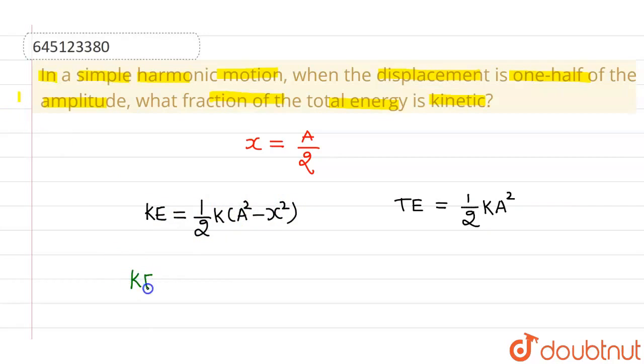kinetic energy will be (1/2)k[a² - (a/2)²], which is a²/4. This can be written as (1/2)k(3a²/4).